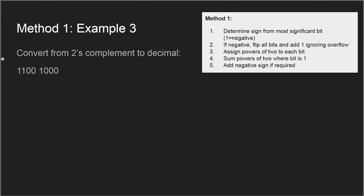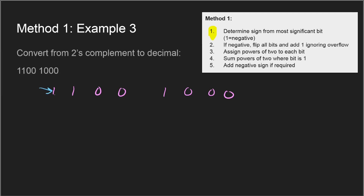Now the third and final example using method one. Our number is 1100 1000. Step one: the most significant bit is one, so we have a negative number. Step two: flip all the bits, giving us 0011 0111.